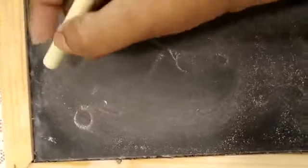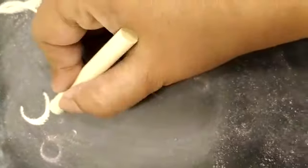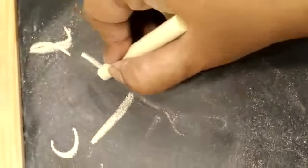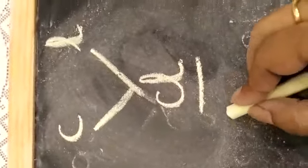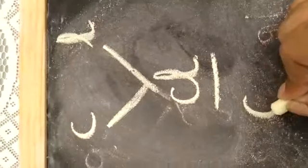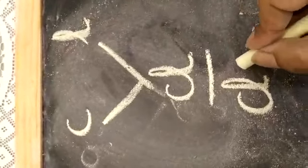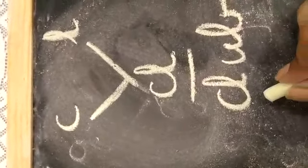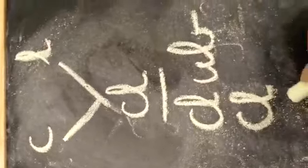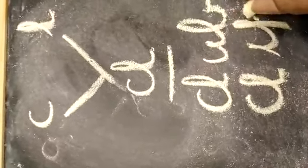Let's do one more blending — the blending of letters C and L. When we blend C and L together, it becomes 'cl'. If we say club — C, L, A, B — the 'cl' sound comes. If we say clip — C, L, I, P — the 'cl' sound comes: clip.